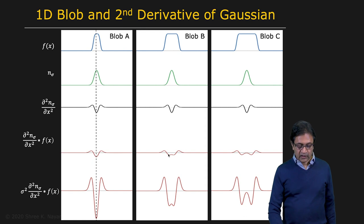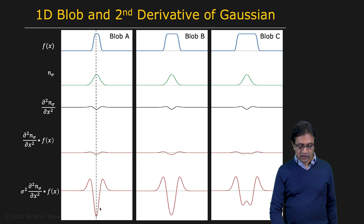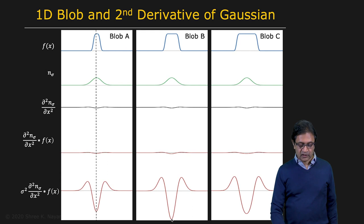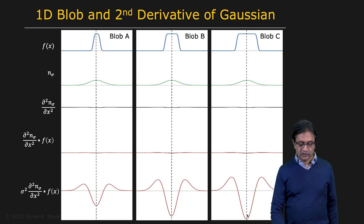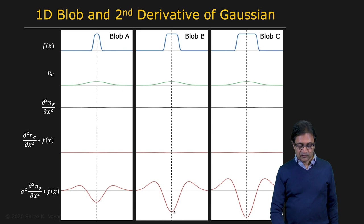When you increase sigma further, blob A's response begins to reduce, while blob B goes up and so does blob C. Finally, blob B gives you a peak. When you get that peak for blob B, blob A's response has already become smaller. And then if you keep going with sigma, at some point you're going to get a peak for blob C as well, while blob B and blob A give smaller responses. If you keep going, all of them will begin to fall.